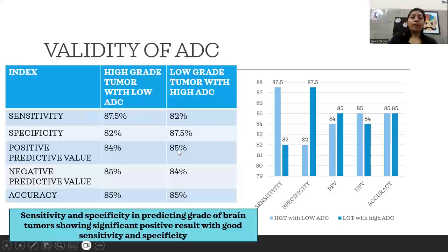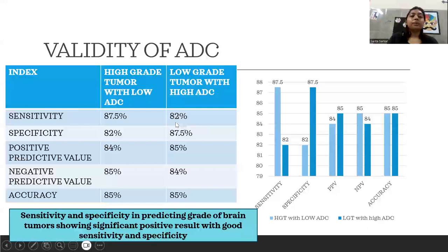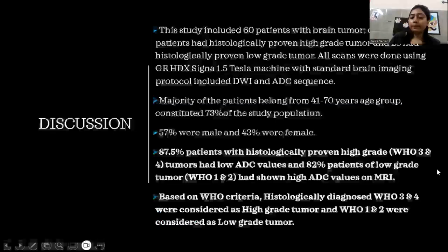Coming to the validity of ADC: high-grade tumor with low ADC showed sensitivity of 87%, specificity of 82%, positive predictive value of 84%, and accuracy of 85%. Low-grade tumor with high ADC value showed sensitivity of 82%, specificity of 87.5%, positive predictive value of 85%, and accuracy of 85%. The sensitivity and specificity in predicting the grade of brain tumors show significant positive results.